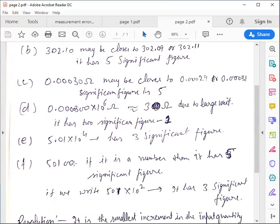Now 50100, here two cases may arise. If it is a number given and expressed this way, it has 5 significant figures. But if we write this quantity in the power of 10, 5.01 × 10^2,